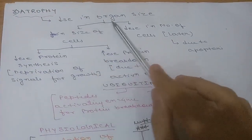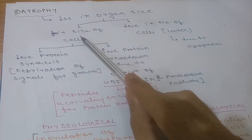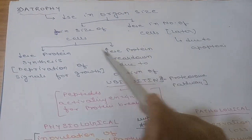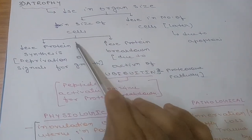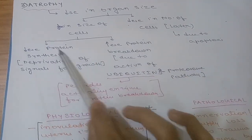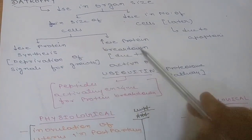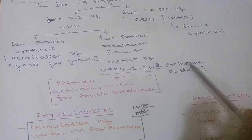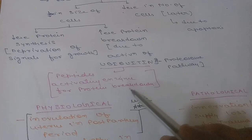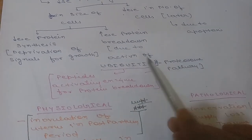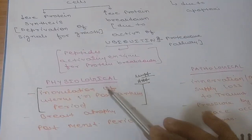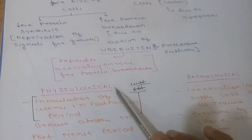Atrophy is a decrease in organ size, due to either decrease in cell size or decrease in cell number. Decrease in cell size is due to two reasons: decreased protein synthesis and increased protein breakdown. Decreased protein synthesis may be due to deprivation of growth signals. Increased protein breakdown is due to activation of the ubiquitin-proteasome pathway — ubiquitins are peptides that activate enzymes responsible for protein breakdown.